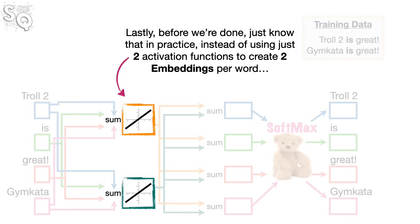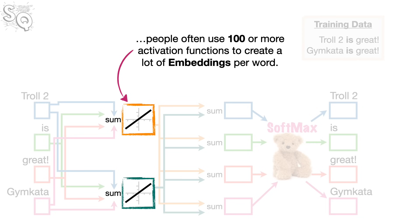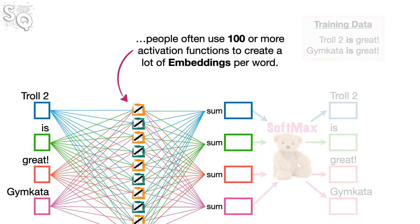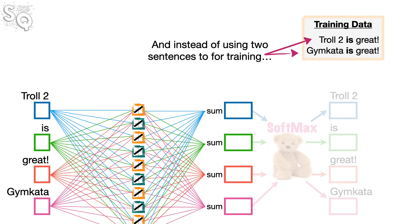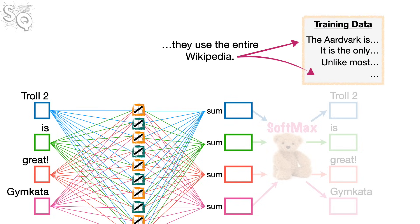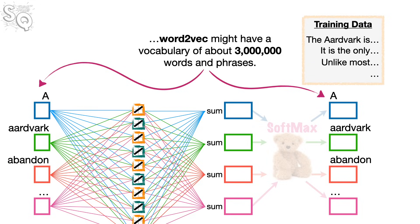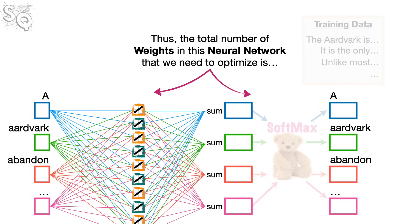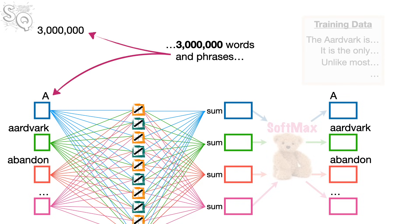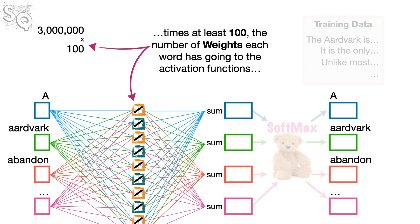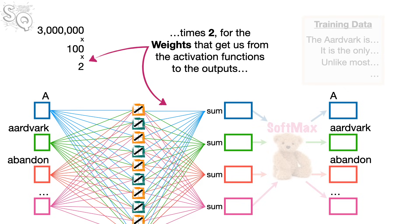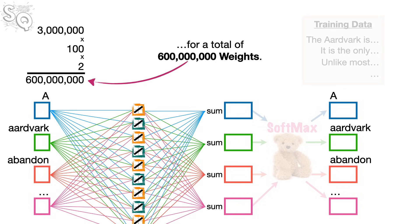In practice, instead of just two activation functions to create two embeddings per word, people often use 100 or more activation functions. And instead of two sentences for training, they use the entire Wikipedia. Word2Vec might have a vocabulary of about three million words and phrases, making the total number of weights roughly 3 million times at least 100, times 2 for the output weights — for a total of about 600 million weights. So training can be slow.